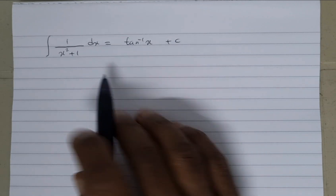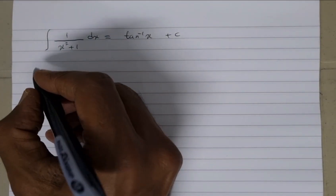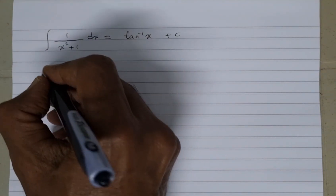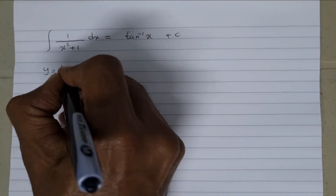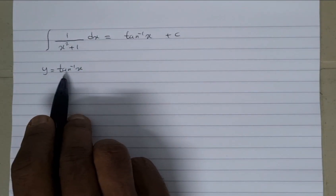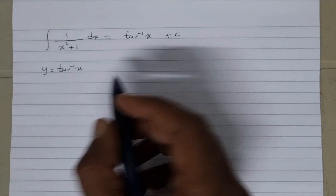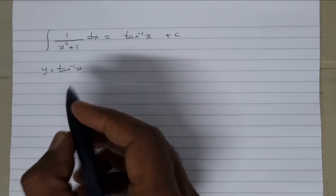Now if we reverse this, how are we going to do this? Basically, if you have something like y is equal to tan inverse of x, and if I tell you to differentiate this, we can differentiate y implicitly. But before we do that, we can transfer the tan inverse on the other side.